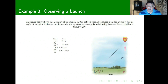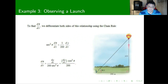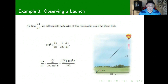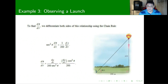First, we find the derivative by differentiating both sides of the equation. Using the chain rule, the derivative of tangent is secant squared, multiplied by dθ/dt. On the other side, we get (1/200) · dy/dt. Notice that for y we take the derivative, which is 1, multiplied by dy/dt via the chain rule. So we obtain this relationship.